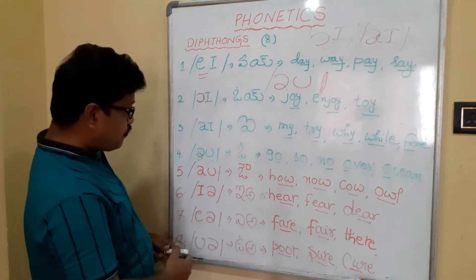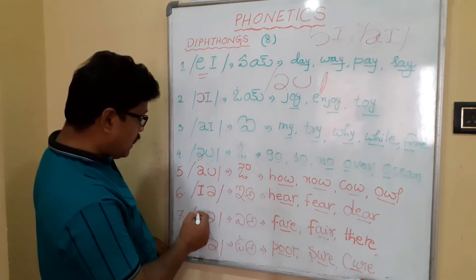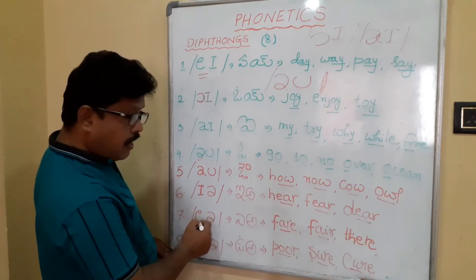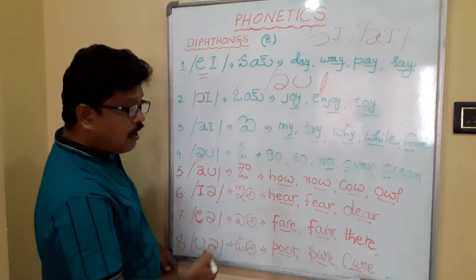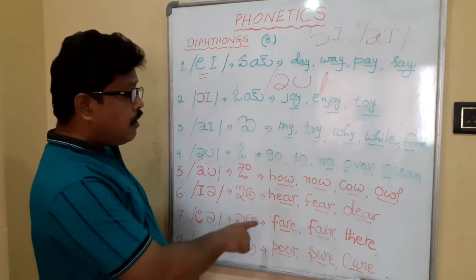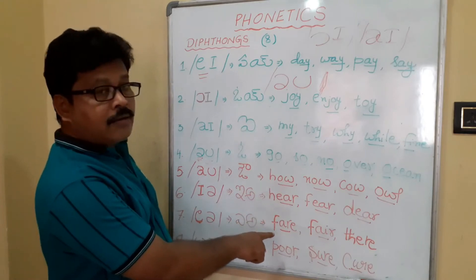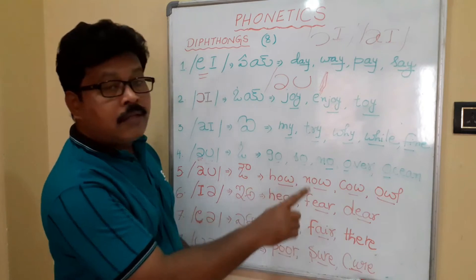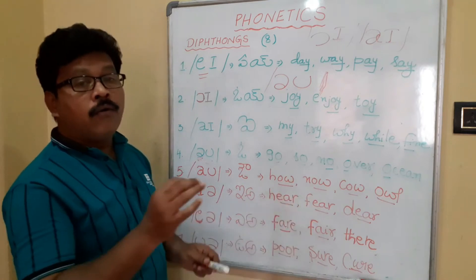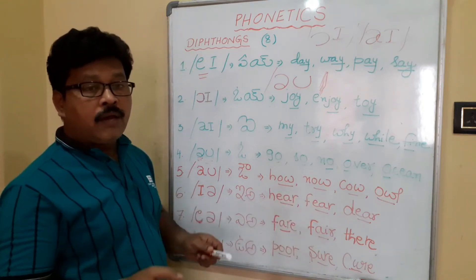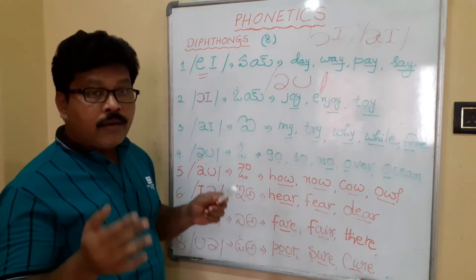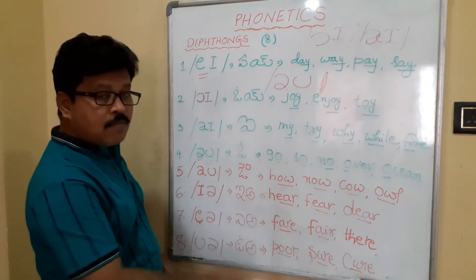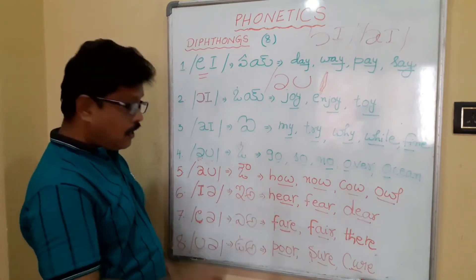The seventh diphthong: instead of I, if you write E and weak A, this is the symbol for the /eə/ (Ea) sound. Examples: fair (F-A-R-E or F-A-I-R), there, where, anywhere, nowhere, somewhere. This is where the /eə/ sound takes place.